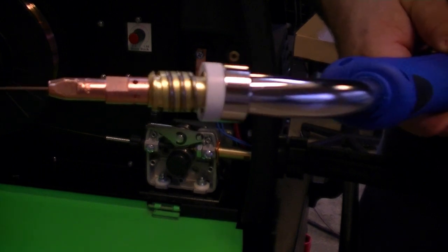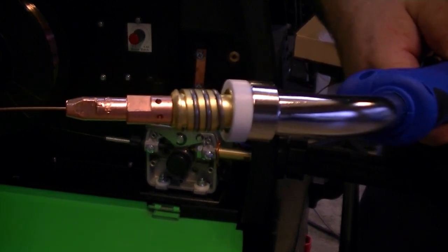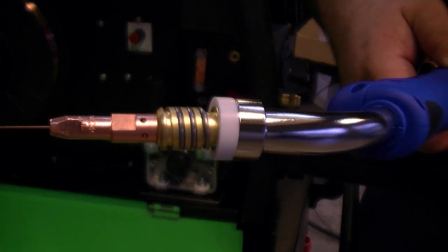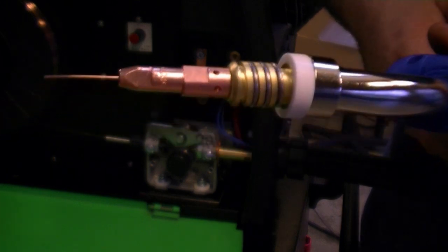Turn the welder on and select the MIG process. Then press the trigger on the MIG gun to feed the wire through the gun. Remove the shielding nozzle and the tip if necessary.